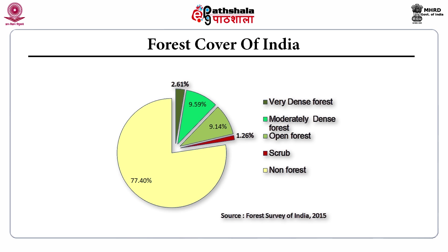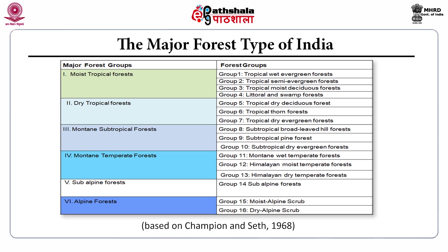The major forest types of India include 16 groups: Group 1 tropical wet evergreen forests, Group 2 tropical semi-evergreen forests, Group 3 tropical moist deciduous forests, Group 4 littoral and swamp forests, Group 5 tropical dry deciduous forests, Group 6 tropical thorn forests, Group 7 tropical dry evergreen forests, Group 8 subtropical broadleaf hill forests, Group 9 subtropical pine forests, Group 10 subtropical dry evergreen forests, Group 11 mountain wet temperate forests, Group 12 Himalayan moist temperate forests, Group 13 Himalayan dry temperate forests, Group 14 subalpine forests, Group 15 moist alpine scrub, and Group 16 dry alpine scrub. This classification is based on Champion and Seth, 1968.